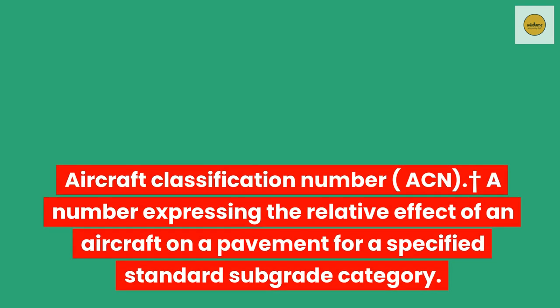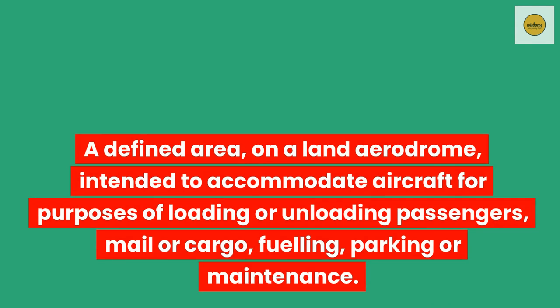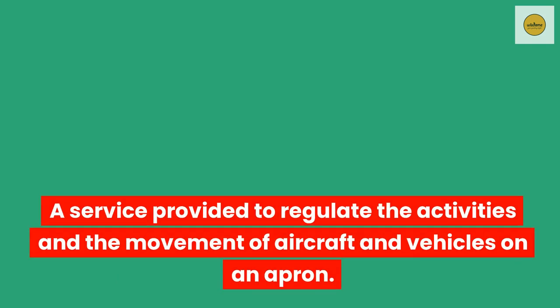Aircraft classification number (ACN). A number expressing the relative effect of an aircraft on a pavement for a specified standard subgrade category. Aircraft stand. A designated area on an apron intended to be used for parking an aircraft. Apron. A defined area on a land aerodrome intended to accommodate aircraft for purposes of loading or unloading passengers, mail or cargo, fueling, parking or maintenance. Apron management service. A service provided to regulate the activities and the movement of aircraft and vehicles on an apron.